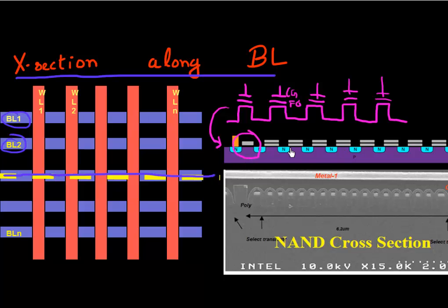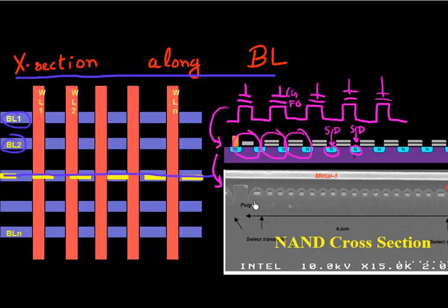Shown here is another picture which shows these different flash memory cells connected in a NAND string. This is one flash memory cell, and this is another, and another - and they are sharing junctions between each other. This is a common source or drain between two cells. This is how it looks in a cross-section, and in fact this is showing an actual cross-section of a NAND array along the bit line direction, where you can identify these flash memory cells.